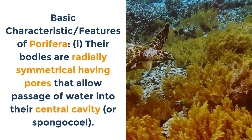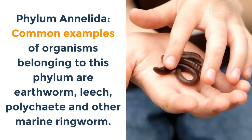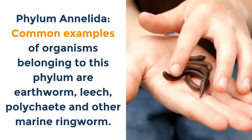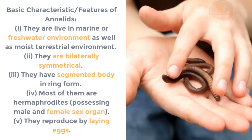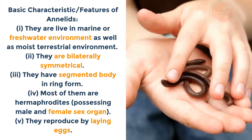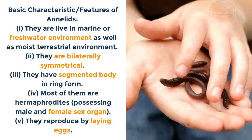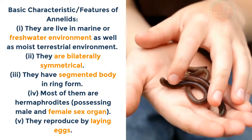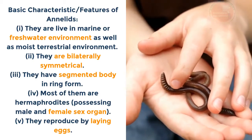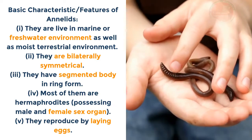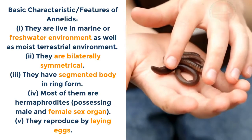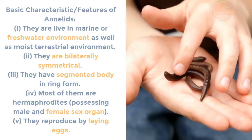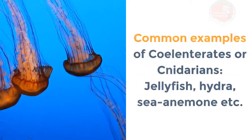Phylum Annelida: Common examples include earthworm, leech, polychaete and other marine ringworms. Basic characteristics: i. They live in marine or freshwater environments as well as moist terrestrial environments. ii. They are bilaterally symmetrical. iii. They have a segmented body in ring form. iv. Most are hermaphrodites, possessing both male and female sex organs. v. They reproduce by laying eggs.